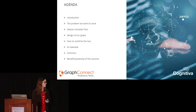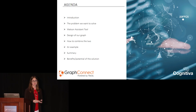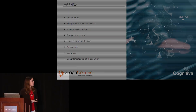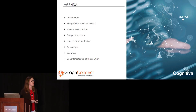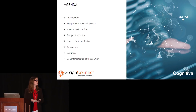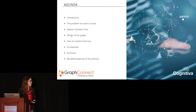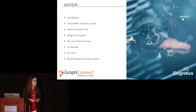Let me start with an outline of the talk. I'm going to give an introduction and briefly describe what we did with this solution. Then I'll tell you exactly what the problem was that we were trying to solve. I will tell you about the Watson Assistant tool, which we used to create our virtual assistants, and then comment on the design of our graph on Neo4j. After that, I'll explain how we combine these two aspects, look at an example of a movie recommendation, and conclude with a summary mentioning the benefits and potential of the solution.